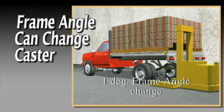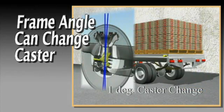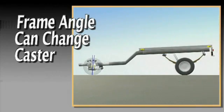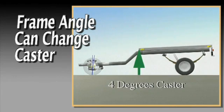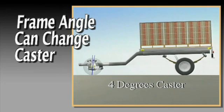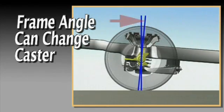In some cases, a degree change in frame angle will affect caster by a degree. For instance, if an empty vehicle has 3 degrees positive frame angle and 4 degrees caster, when the frame angle moves to zero, caster may shift to 7 degrees.